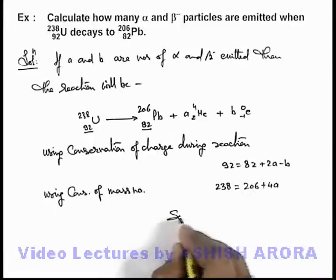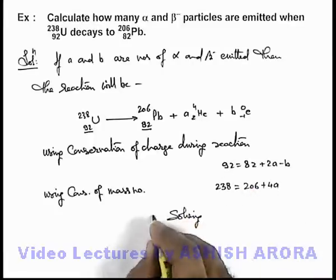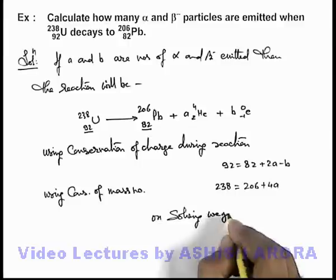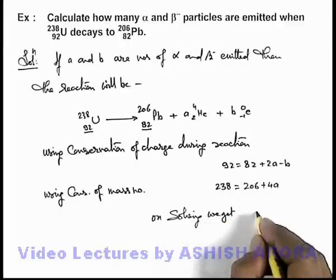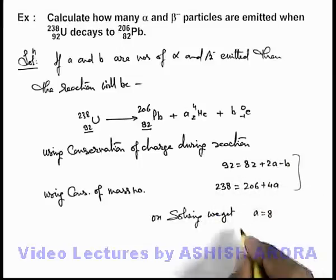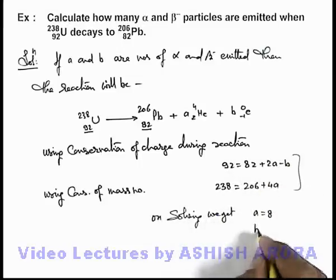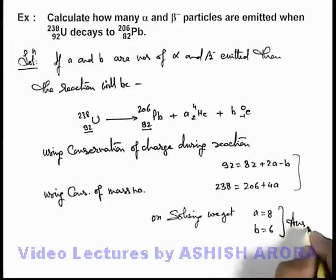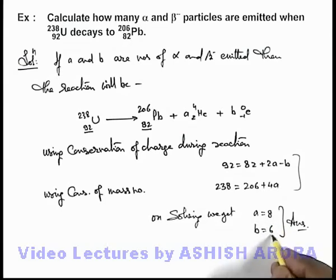And from these relations we can directly get, we can write on solving we get here the value of a is equal to 8 and if we substitute the value of a in first equation we get the value of b is equal to 6. These are the answers to this problem, that means 8 alpha and 6 beta particles are emitted in this reaction.